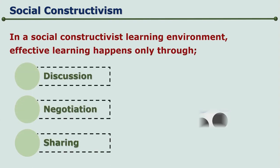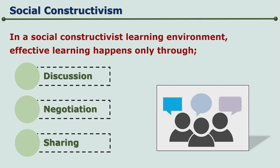In a social constructivist learning environment, different processes of interaction such as discussion, negotiation, and sharing are very important in effective learning. Discussions bring in various perspectives from various participants. Negotiation is the give and take which happens for a particular aspect of learning. One person may know more than the other, and for a different aspect, some other person will be the more knowledgeable person. So in a group, when everyone shares whatever they know about a particular situation, the resulting synergy will lead to enhancement of cognitive development of the child.